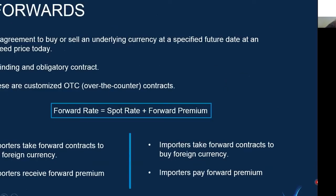The most commonly used tool by exporters and importers is forward contracts. Forward contracts are agreements to buy or sell an underlying currency at a specified future date at an agreed price today. This price is known as the forward rate. Forward contracts are binding and obligatory contracts — that is, once entered into, they cannot be withdrawn from. These contracts are customized, that is tailor-made according to the suitability of the exporter and importer. Also, these contracts are over-the-counter contracts, traded over-the-counter with the banks.